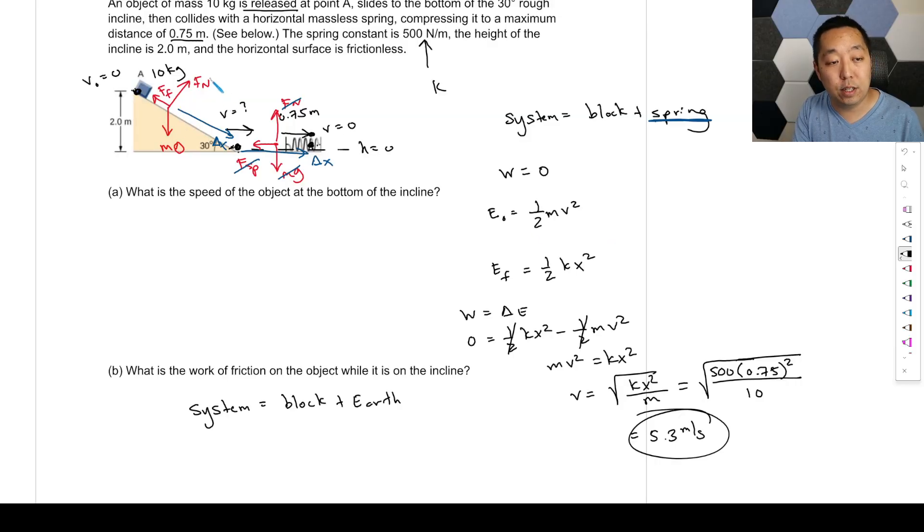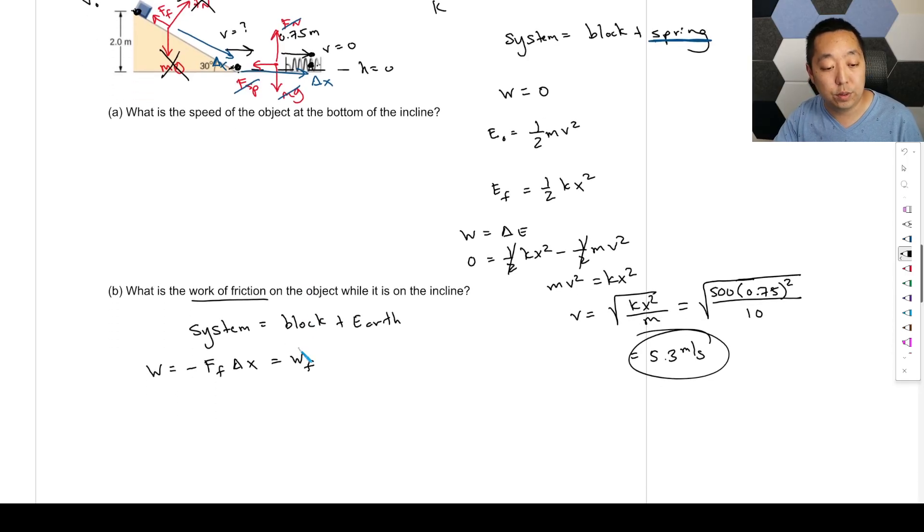Okay, so which one of those do work? Normal force perpendicular to displacement doesn't do any work because it's perpendicular, right? Gravity doesn't do work. It's not external to the system. It does work, but not external work. So only friction does work. So that's the negative force of friction times the displacement is the only work that's happening. And so that's just the work done by friction because they only want us to know what's the work done by friction.